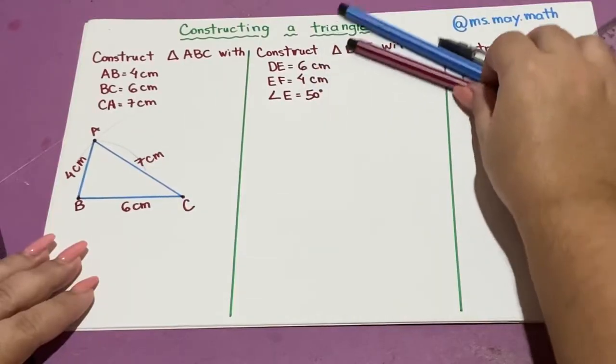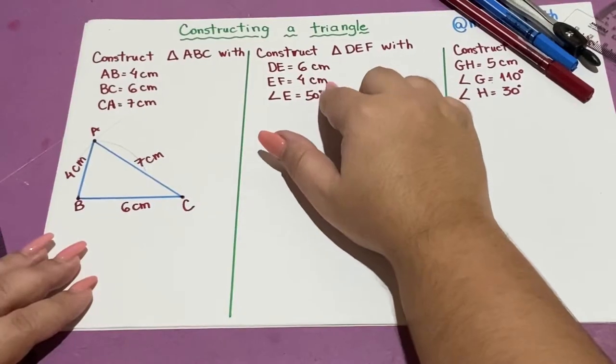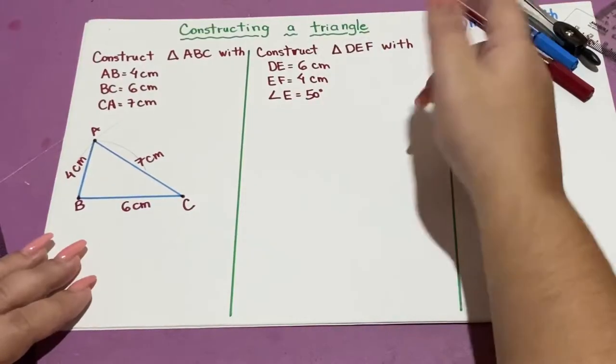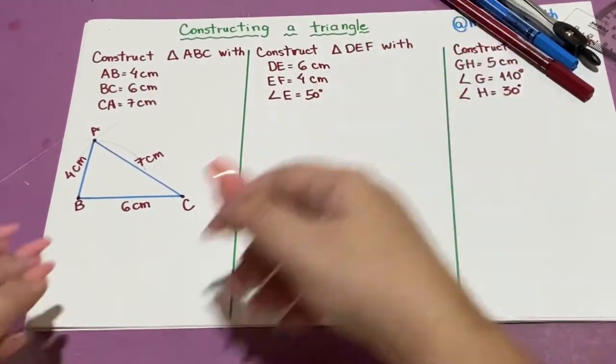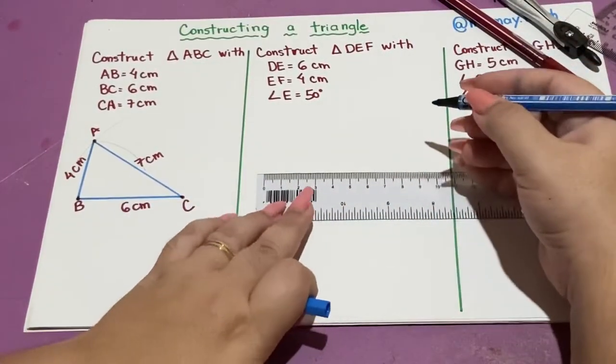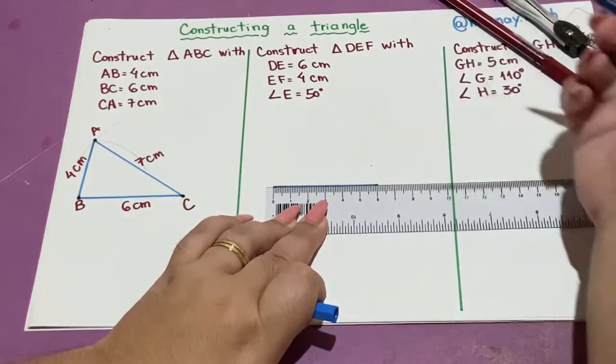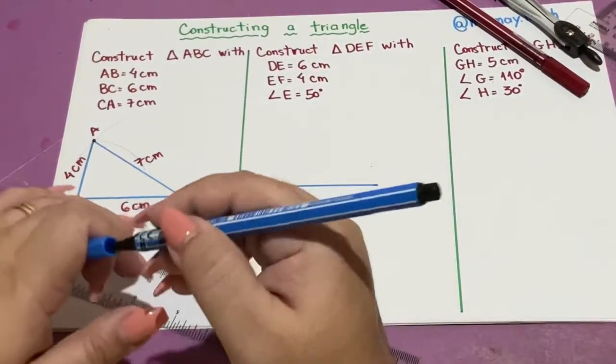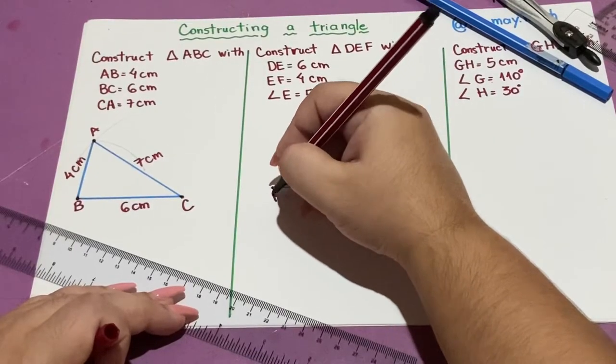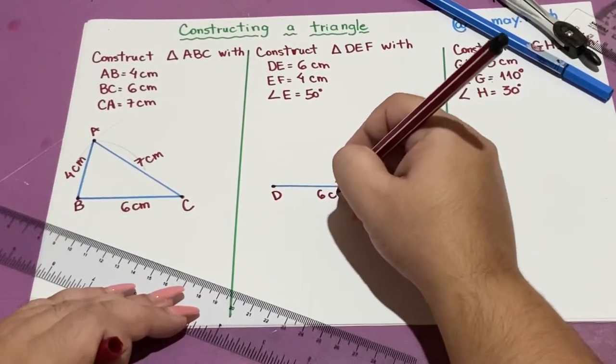The second situation is when the triangle DEF has two sides given and one angle. I'm going to choose one of the two sides. I'm going to choose this one, DE, that is 6 centimeters. So I will draw 6 centimeters and label the sides. DE equals 6 centimeters.